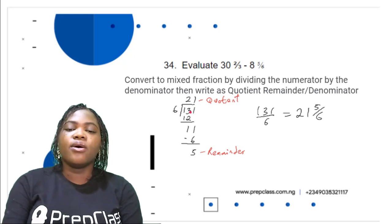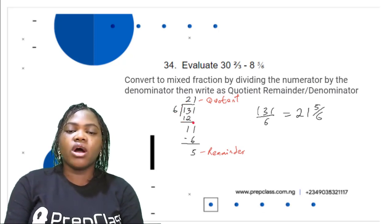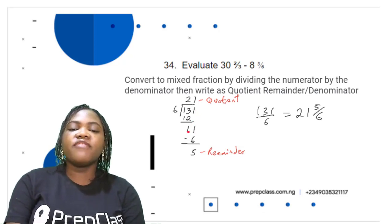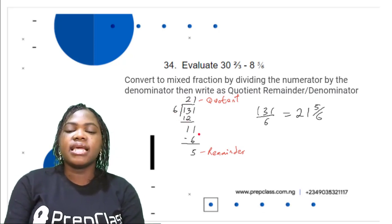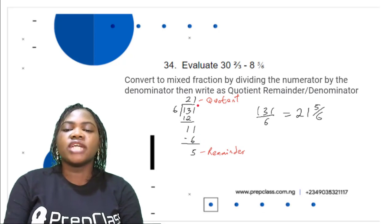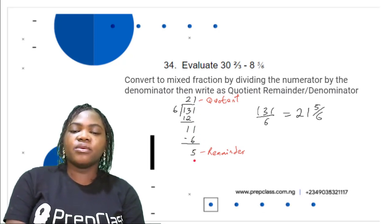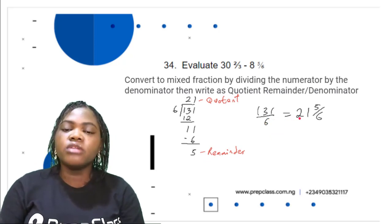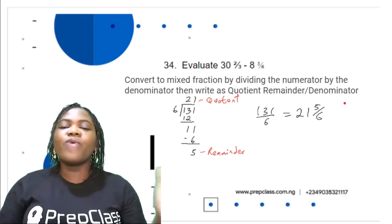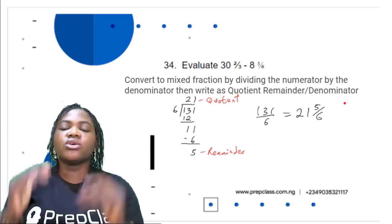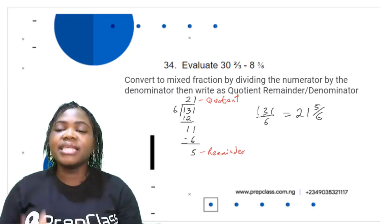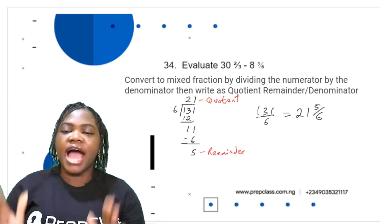131 ÷ 6: 13 ÷ 6 = 2, 2 × 6 = 12, 13 − 12 = 1, bring down 1 to get 11. 11 ÷ 6 = 1, 1 × 6 = 6, 11 − 6 = 5. Quotient is 21, remainder is 5. So 131/6 = 21 and 5/6. Therefore 30 and 2/3 minus 8 and 5/6 equals 21 and 5/6. The correct option is D.